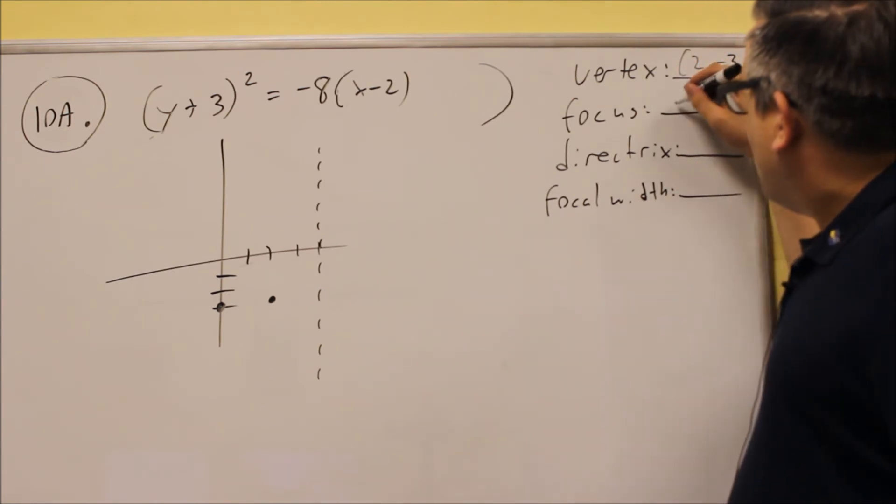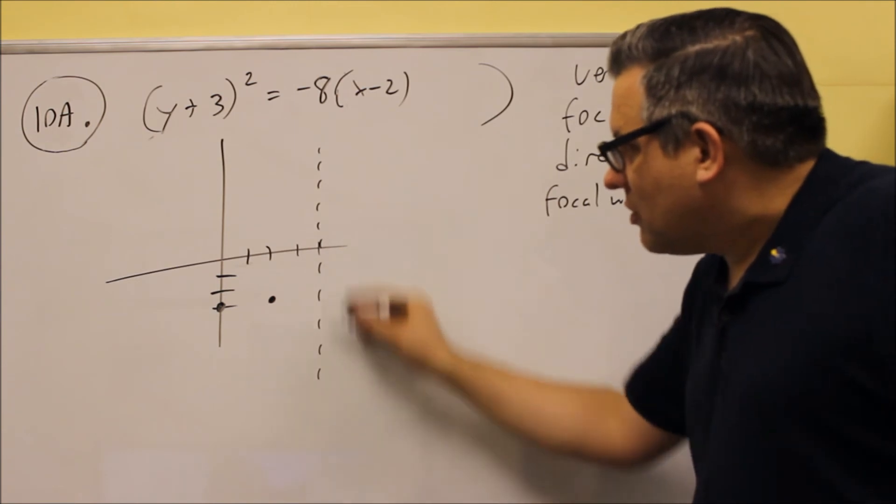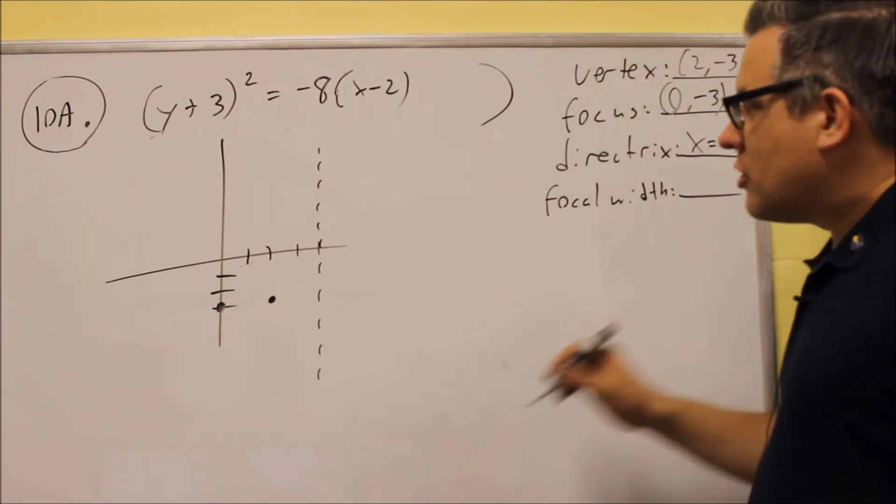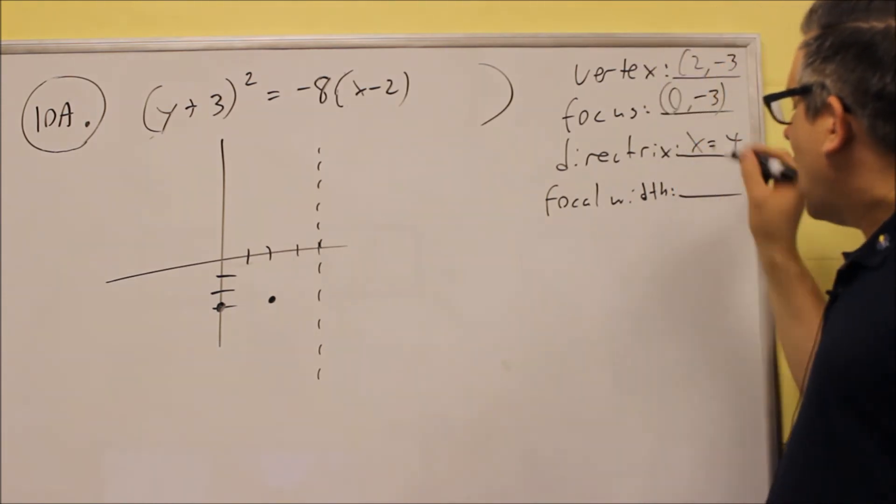Focus is going to be at 0, negative 3. I can read that directly from the graph itself. In your directrix, the equation for that is x equals 4. Don't forget to put an x equals there because you need an equation of a line, so you need to have x equals.